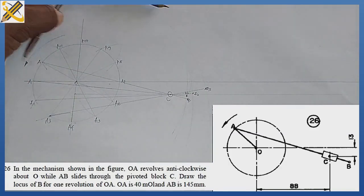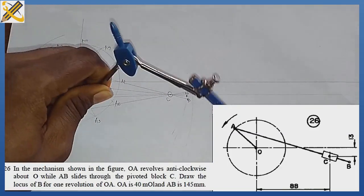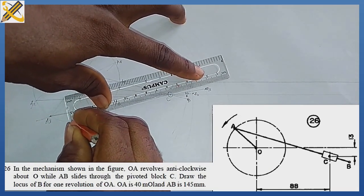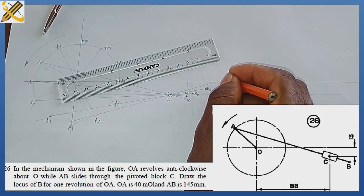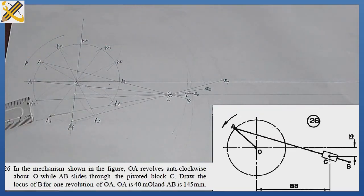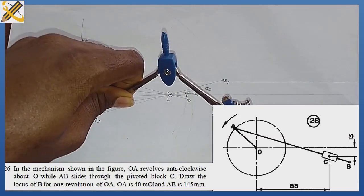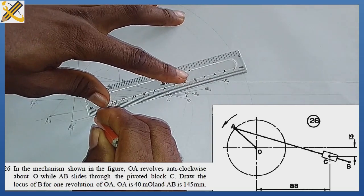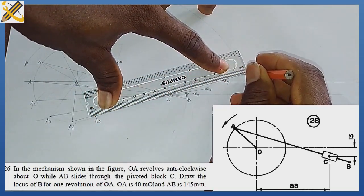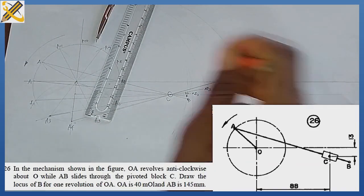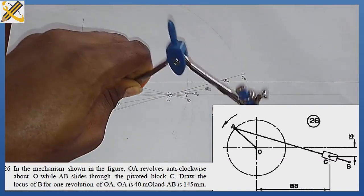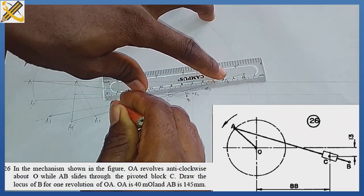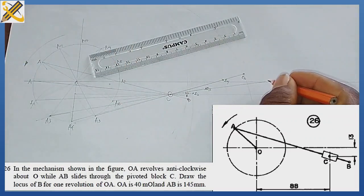For point A4, place the compass on A4, strike an arc with length 145 mm, then draw through point C to touch the new arc — that is point B4. For point A5, the same principle: with compass length 145 mm on A5, strike another arc, then rule through point C from A5 to touch that new arc, giving us point B5.